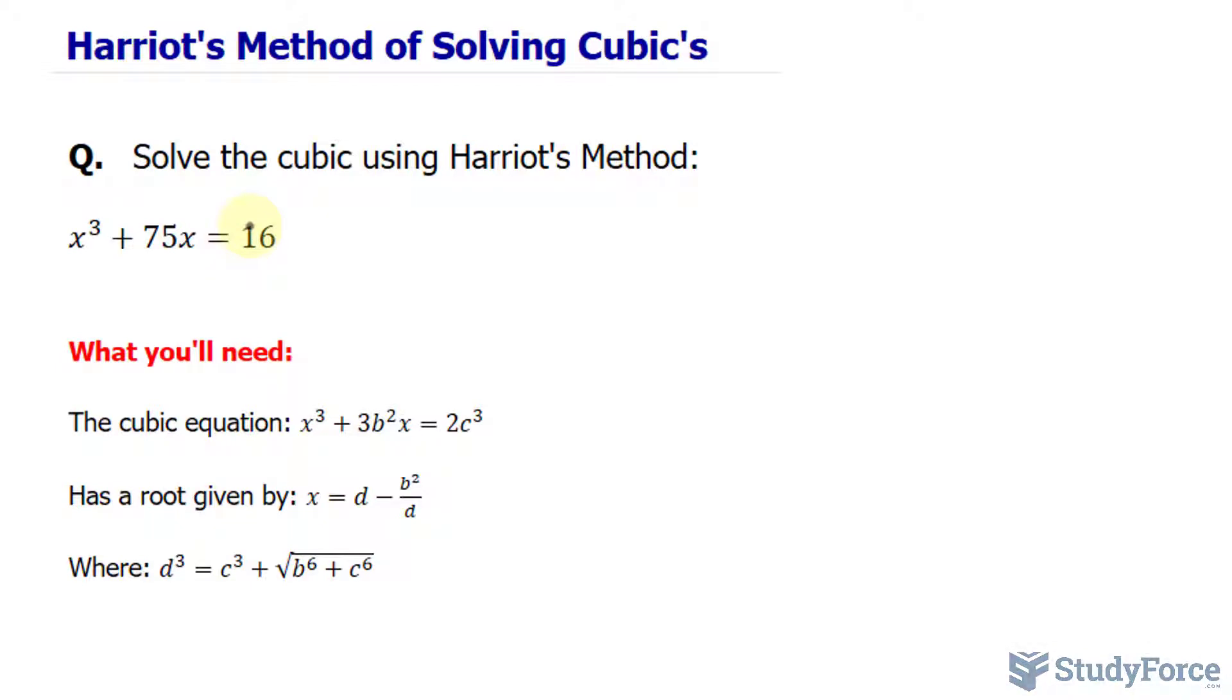To solve using Harriot's method, we have to use this formula where x = d - b²/d. Where d can be found using the following equation where you have c³ plus the square root of b⁶ + c⁶. Now you're probably wondering what c and b are because if we know what c and b are we can find d and then we can apply everything to this equation to find out our x-intercept.